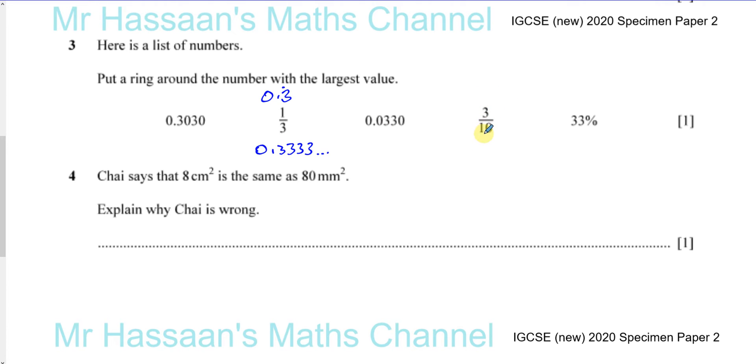This is already in decimals. 3 over 10 is going to be 0.3. 0.3. But just to help me compare, I'm just going to add three more decimal places.